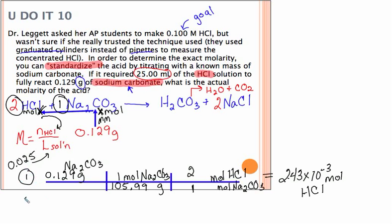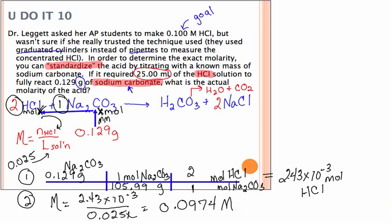Now we have enough. We've done step 1, we have the moles of HCl. Step 2, we can calculate molarity. Our moles, 2.43 times 10 to the minus 3 over our given liters, which was 0.025 liters. And that's going to give me 0.0974 molar. So it looks to me that our AP students were a little bit off of that 0.1 molar HCl. But you know what? That doesn't mean we can't use it. What's more important in most of these contexts is that you know exactly what you have, not that what you have made is exactly a 0.1 molar solution. Now that's not true in all cases, but in most laboratory situations, that's what's most important.